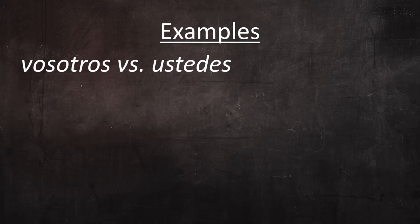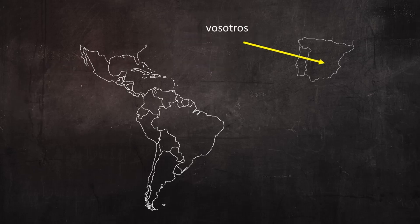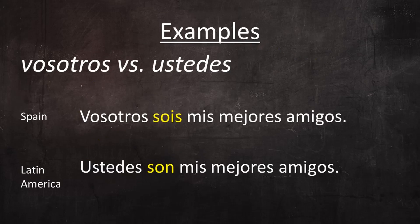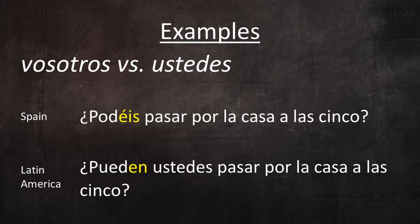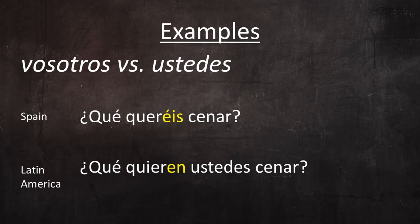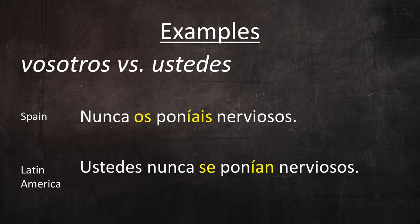Because vosotros is the normal form of address in Spain and ustedes is the normal form in Latin America, the distinction here isn't between formal and informal, but between the Spanish of Spain and the Spanish of Latin America. Examples: Vosotros sois mis mejores amigos. / Ustedes son mis mejores amigos. — Habladme en inglés, no entiendo mucho español. / Háblenme en inglés, no entiendo mucho español. — ¿Podéis pasar por la casa a las cinco? / ¿Pueden ustedes pasar por la casa a las cinco? — ¿Qué queréis cenar? / ¿Qué quieren ustedes cenar? — Nunca os poníais nerviosos. / Ustedes nunca se ponían nerviosos.